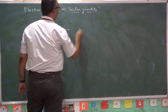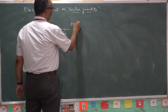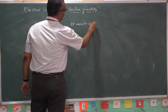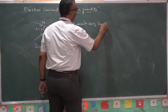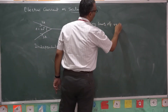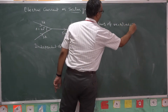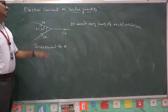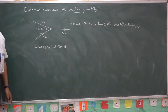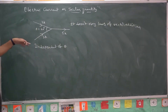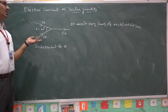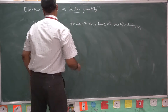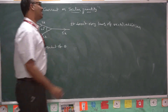Why is current considered a scalar quantity? It does not obey the laws of vector addition. Hence, electric current is considered a scalar quantity. Similarly, we take pressure also as a scalar quantity. Strictly speaking, electric current can also be considered as a tensor quantity.